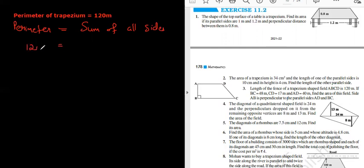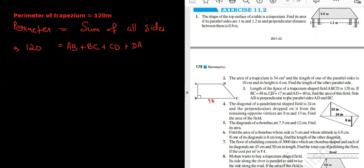So the perimeter is 120, which is the sum of all sides. Looking at the figure, can I write: AB + BC + CD + DA = 120? They have given BC = 48, DA = 47, CD = 17, and ED is 40. By substituting these values, can I find AB?